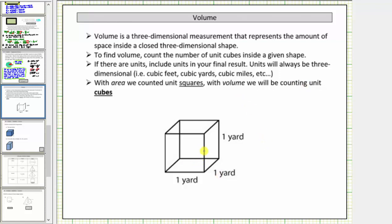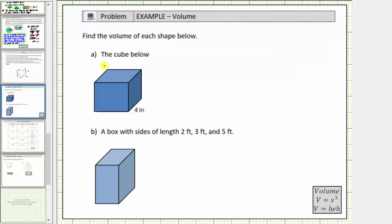Let's look at some examples. For A, we're asked to find the volume of the cube shown. Because we're given it's a cube, we know all the edges have a length of four inches. To determine the volume, we need to determine how many cubic inches will fit inside this cube.